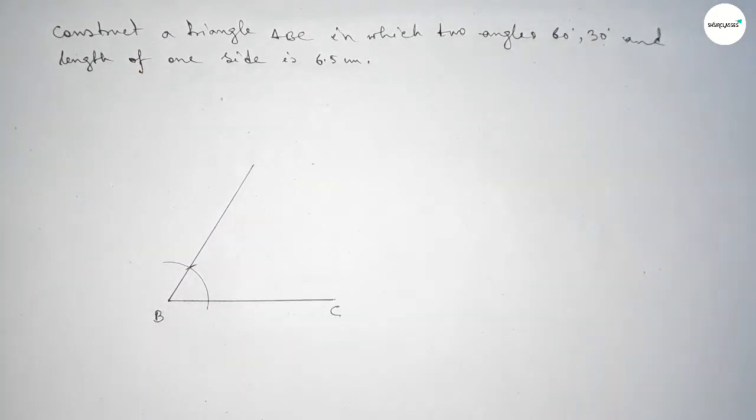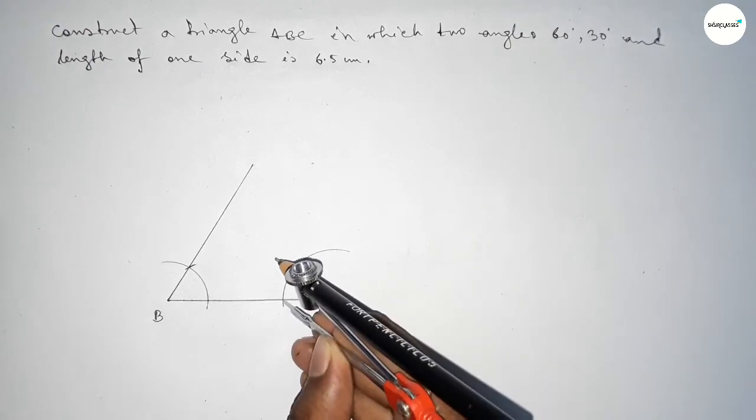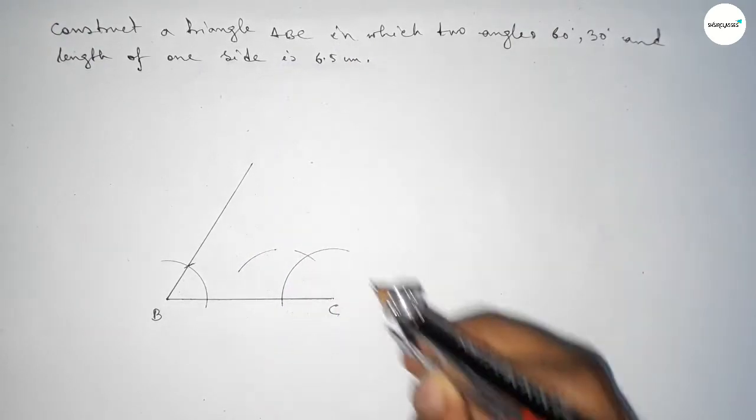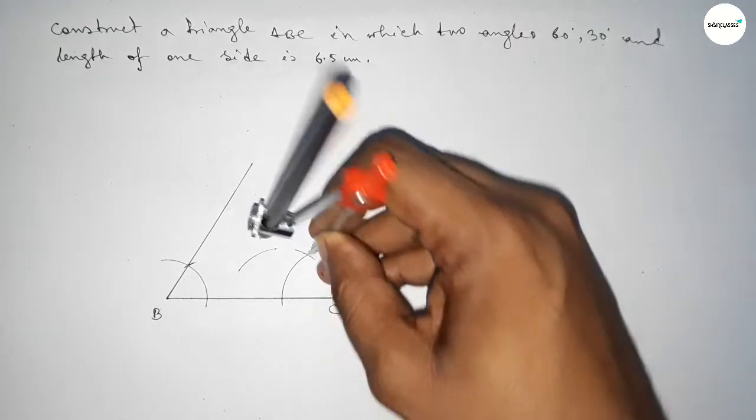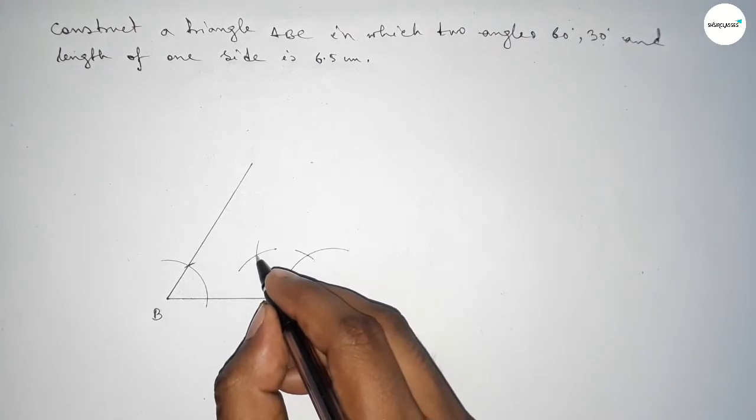Now drawing a 30 degree angle on point C. Putting the compass here and drawing an arc here, and putting the compass here and cut here and cut here with the same length, and putting the compass here and cut here so both curves intersect at a point.